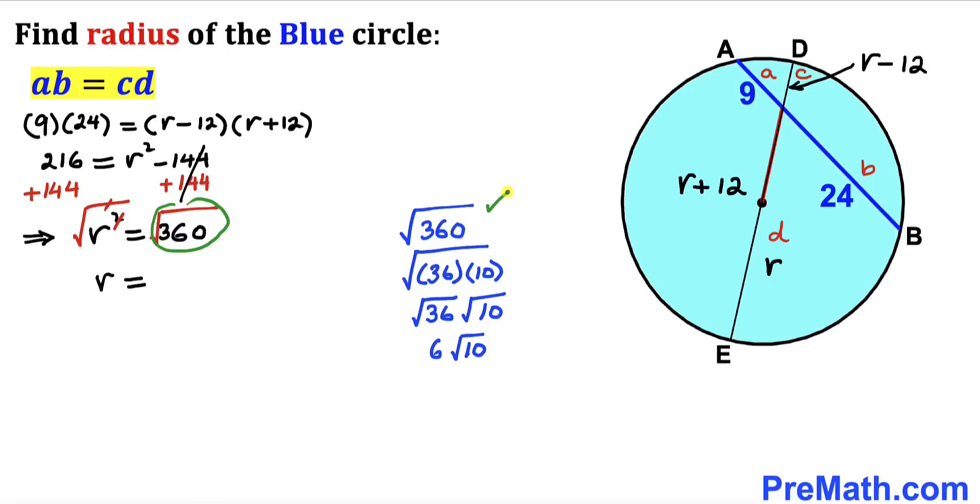I have broken it down and it turns out to be 6 times square root of 10 as the simplest form. Therefore I can write square root of 360 as 6 times square root of 10, as you can see over here.